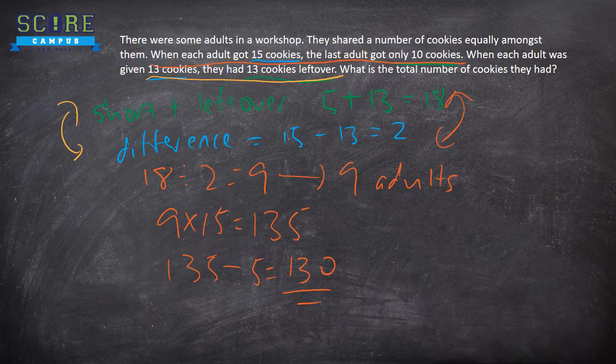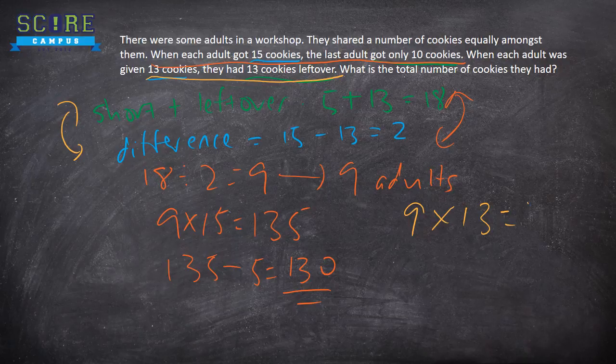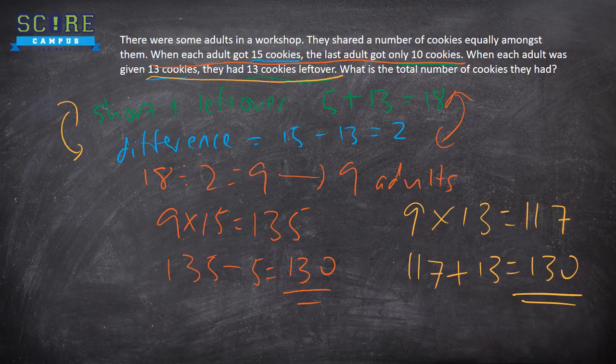Now let's just say you chose to use this statement. You'll realize you get the same answer. So 9 adults times 13 equals to 90 plus 27, 117. 117 because you have 13 left over plus 13 equals to 130. You get the same answer.